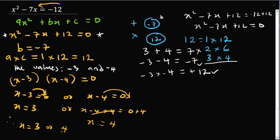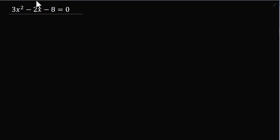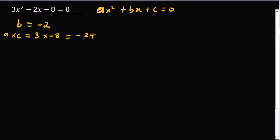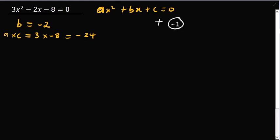Let's do one more question. We have 3x squared minus 2x minus 8 equal to 0, which is in standard form. The first step: b is minus 2. Then identify the product of a and c: a is 3 and c is minus 8, so the product is negative 24. We've done the first step — identified our b term and the product of a and c.